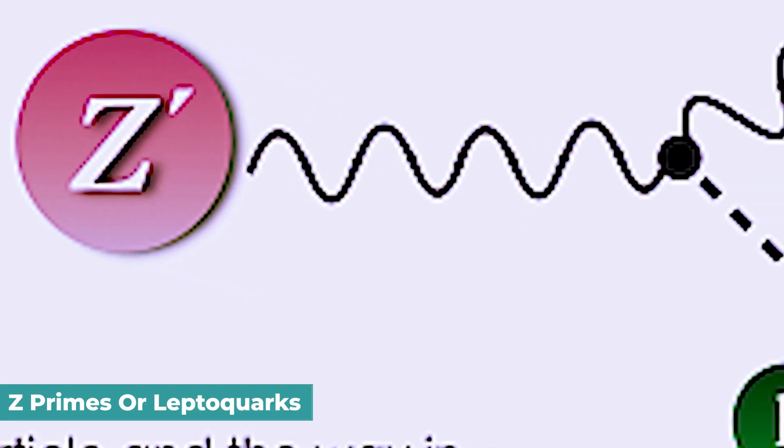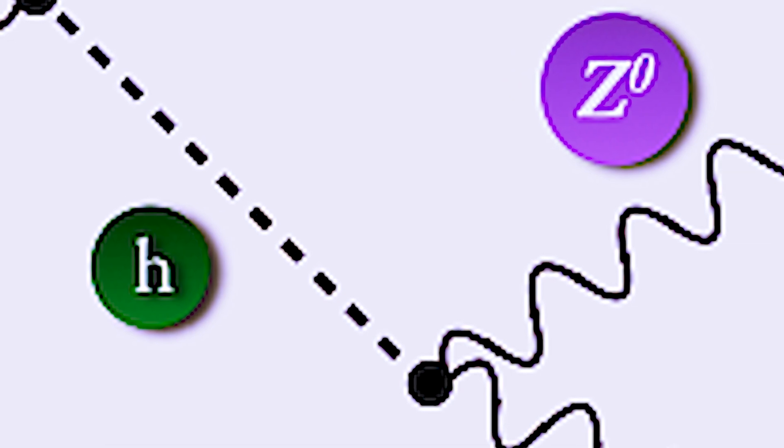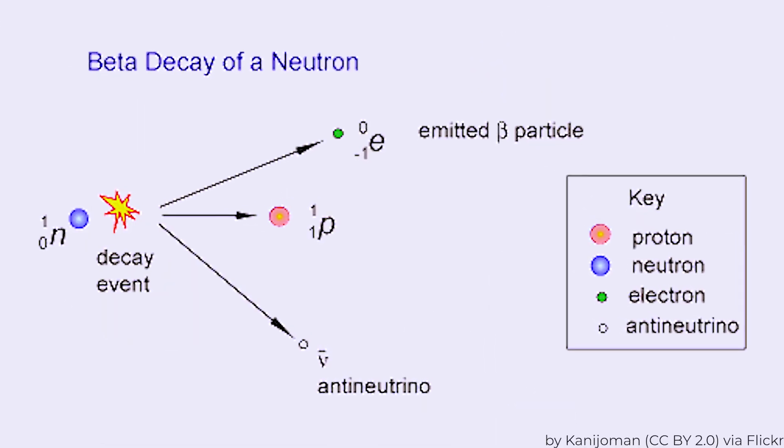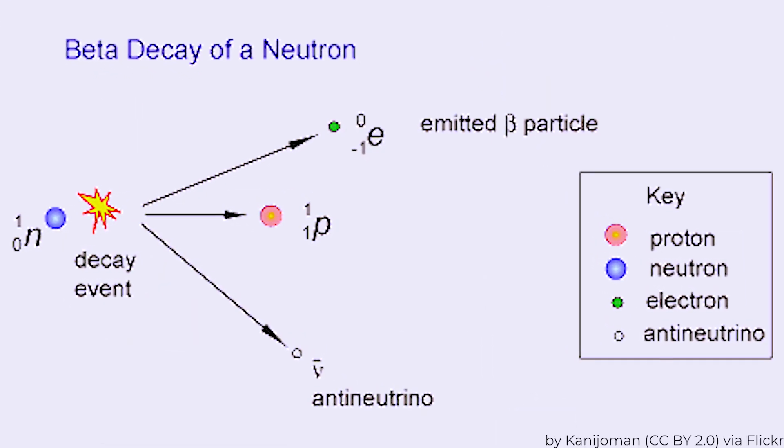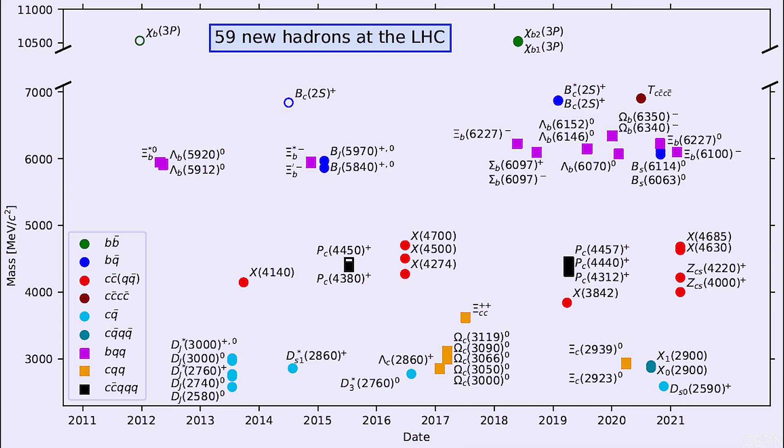If the discovery holds up, it might be explained by yet-to-be-observed particles known as Z primes or leptoquarks, which exert novel pressures on other particles. The possible existence of a new quantum force that causes B mesons to decay into muons at an inappropriate pace. Will this ever happen?